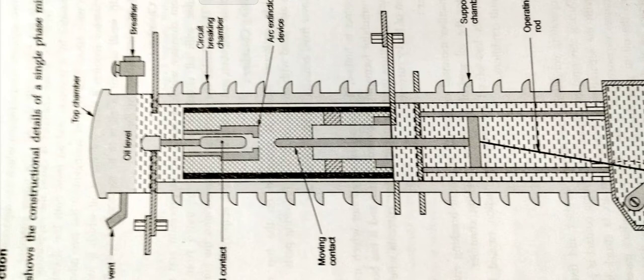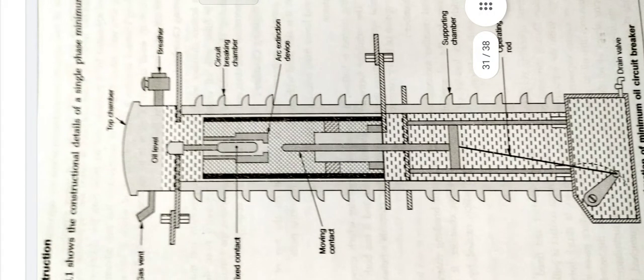The moving contact is hollow. It consists of cylinder which moves down over a fixed post piston. The turbulator forms an arc control device and it has both axial and radial vents. The axial venting ensures the interruption of low current whereas radial venting ensures interruption of heavy currents in current breaking chamber.